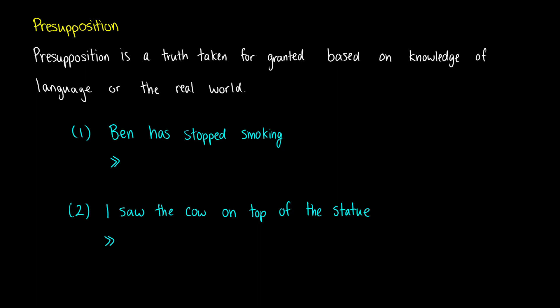The first one is Ben has stopped smoking. There's something about the word 'stopped' that gives a presupposition about the event in the past. If you say Ben has stopped smoking, unless you interrupt someone and say that's not true, what you have to believe is that Ben smoked at some point in the past.